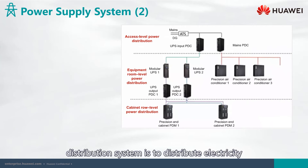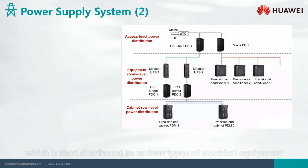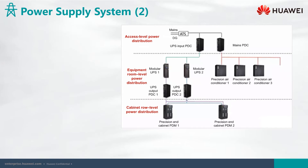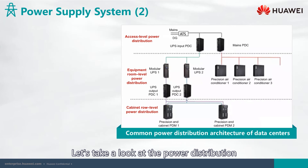The main function of the low voltage distribution system is to distribute electricity to various types of electrical equipment according to their requirements. Examples of such equipment include UPS, air conditioning, and lighting equipment.